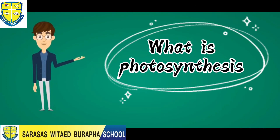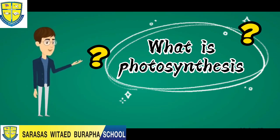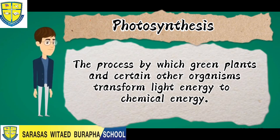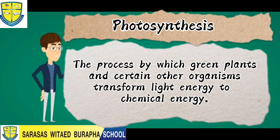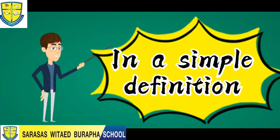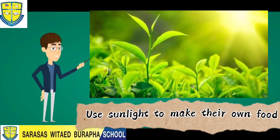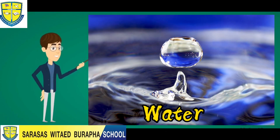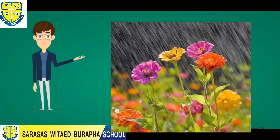But what is photosynthesis? Photosynthesis is a process by which green plants and certain other organisms transform light energy into chemical energy. In simpler terms, plants use sunlight to make their own food.